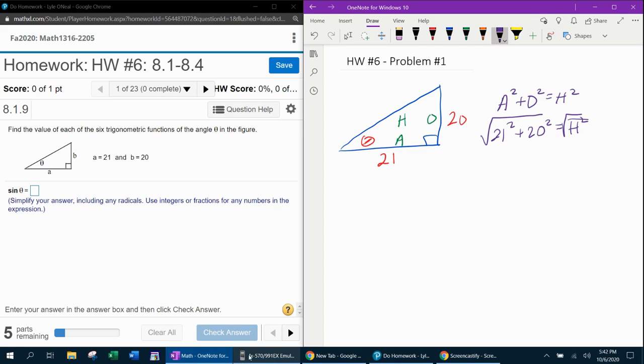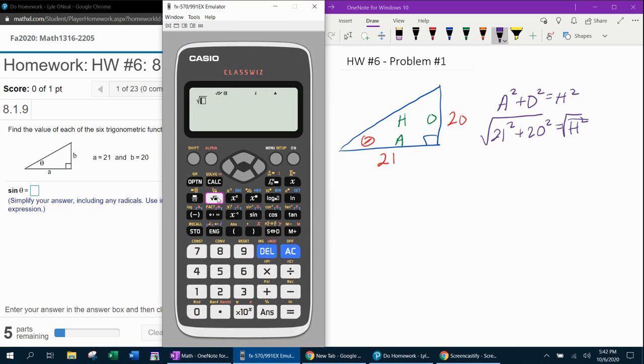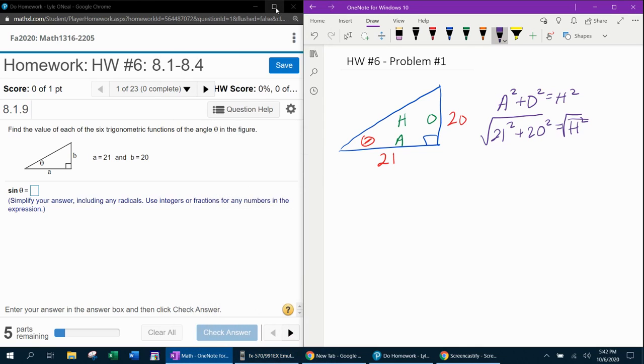And now it's time for the handy-dandy calculator. Square root of 21 squared plus 20 squared. Oh, yay. It's an integer. So the hypotenuse is going to be 29.